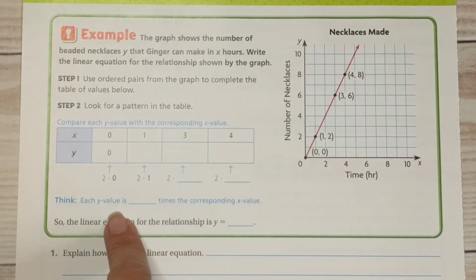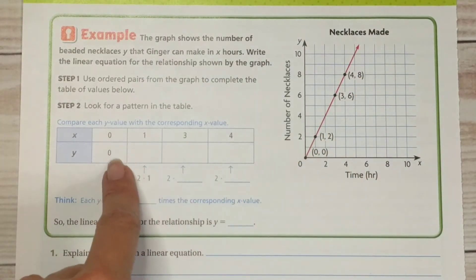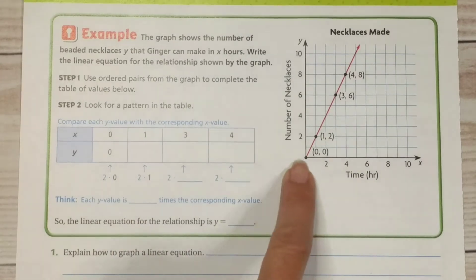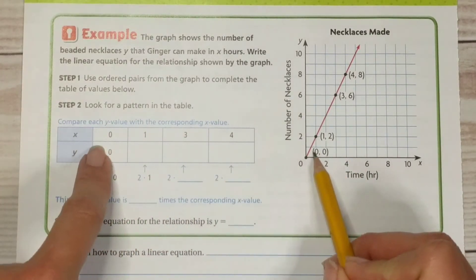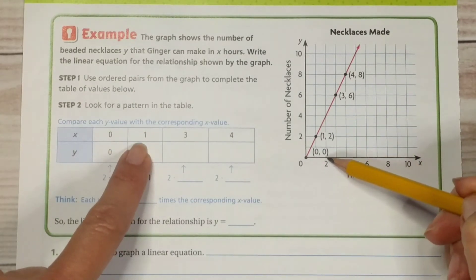All right. So this time, they gave us the ordered pairs in the graph and now we need to fill this out. The table out. So we have 0, 0, the origin.